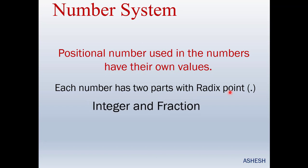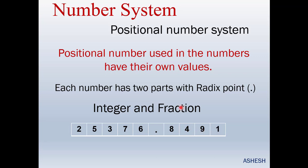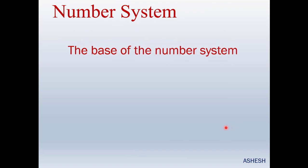A number has two parts: the first part is the integer and the second part is the fraction. For example, in the number 2532.8491, the digits before the radix point are the integer part and the digits after the radix point — 8491 — are the fraction. That point is called the radix point.